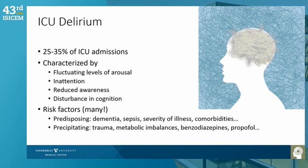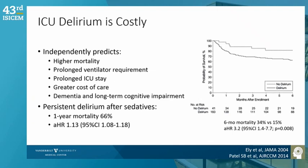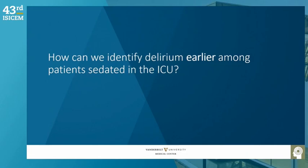ICU delirium is an acute encephalopathy characterized by fluctuating arousal, attention, and reduced awareness, occurring in about a third of ICU admissions. It has multiple predisposing and precipitating risk factors including sepsis and sedation. It independently predicts mortality, long-term costs, ICU length of stay, mechanical ventilation requirement, and long-term cognitive impairment. Each additional day of delirium is independently associated with a 13% increased risk of one-year mortality.